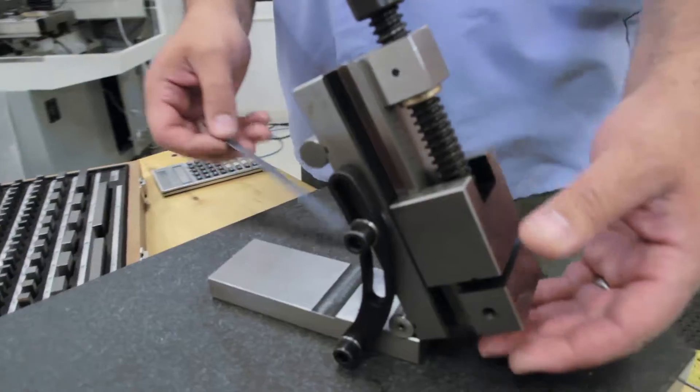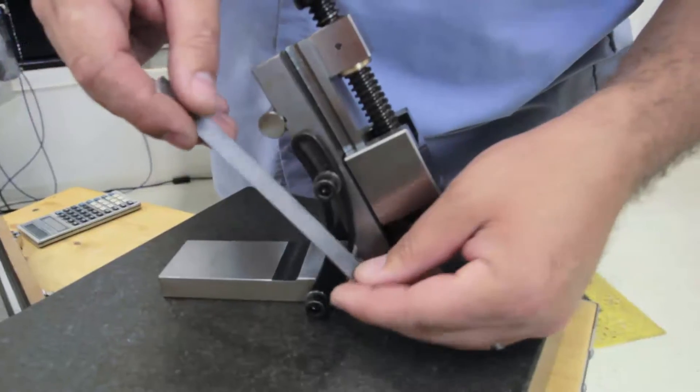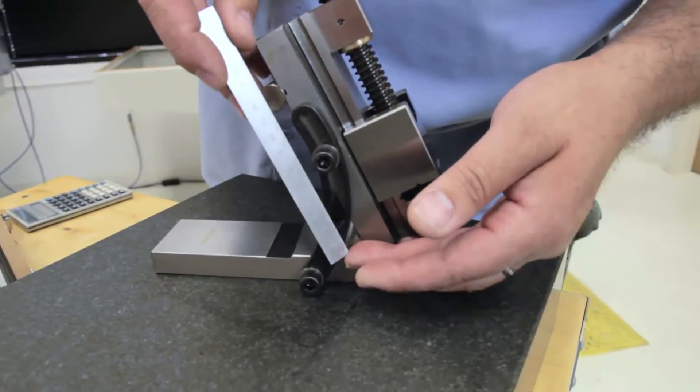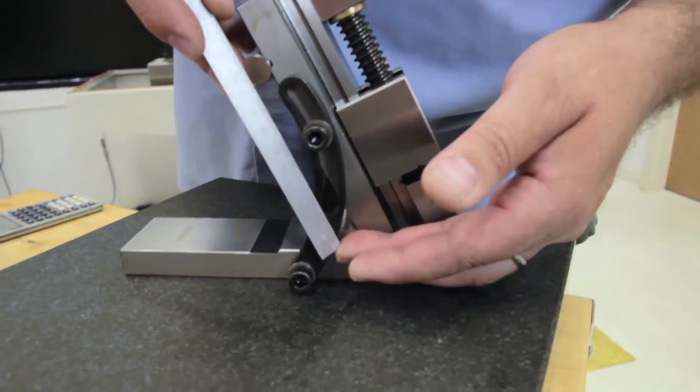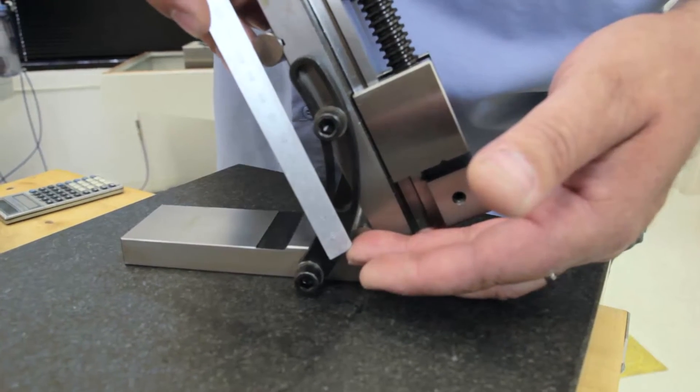To set the angle, the first thing you have to establish is what size your sine is. And to do that, you measure between the dowels, so that's where you're referencing. And this is a 100mm sine vise.